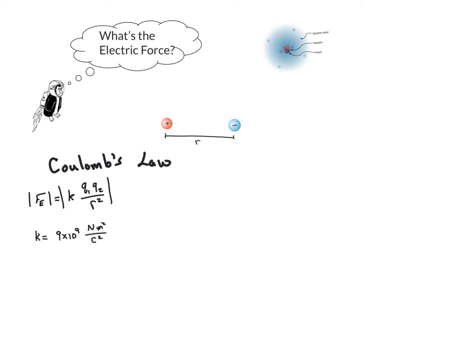Now the average distance between the electron and the proton in a hydrogen atom is pretty small, but 5.3 times 10 to the negative 11 meters. So the magnitude of the electric force can be calculated.